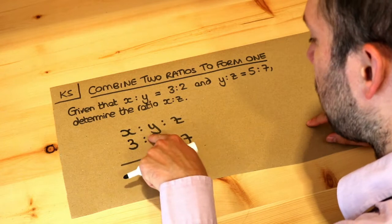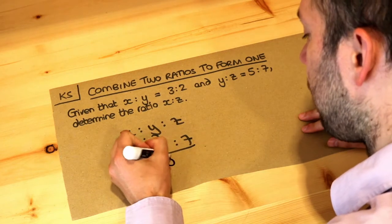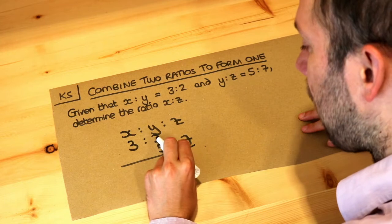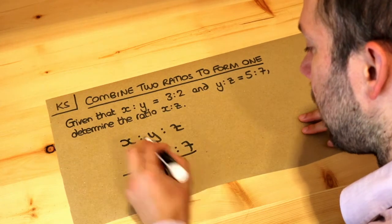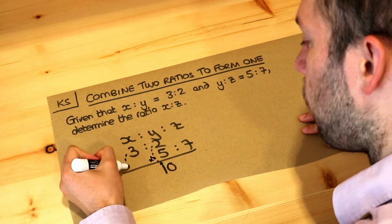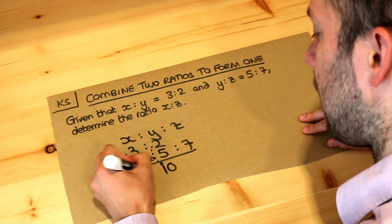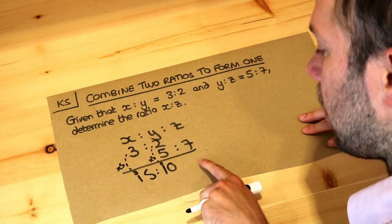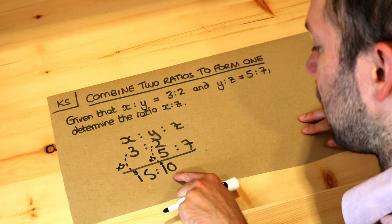What's the lowest common multiple of 2 and 5? Well, it's 10. Now, to get from that 2 to this 10, it seems to be 5 times bigger. So the 3 also needs to be 5 times bigger, which will be 15. So 3 to 2 is the same as 15 to 10.